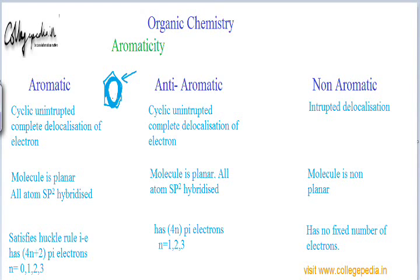The molecule has to be planar, and there are only two hybridizations in which we have planar geometry. One is sp hybridization, which gives a linear structure that is obviously planar. But sp hybridization doesn't exist in a cyclic ring because the bond angle in sp is 180 degrees, and in a ring the bond angle can't be 180 degrees — the bonds curve to complete the ring. So sp hybridization does not exist in small cyclic rings, and a molecule can't be planar because of sp hybridization.